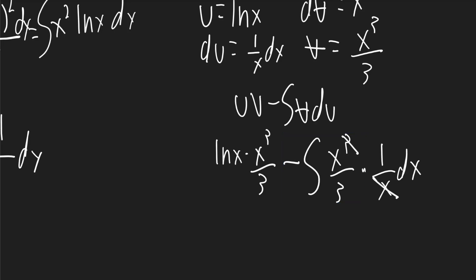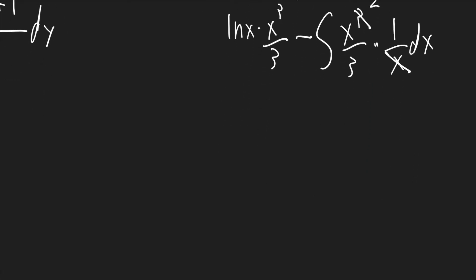This x on the bottom will cancel, and we'll have x squared on the top. So it'll be x cubed ln x over 3 minus 1 third the integral of x squared dx.